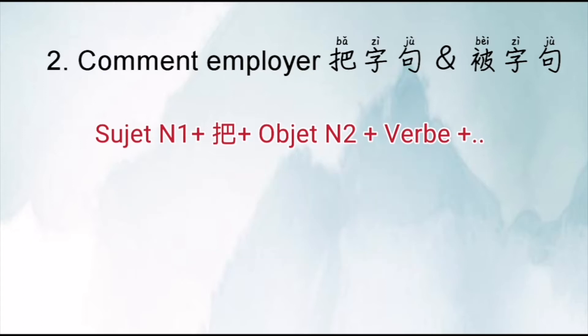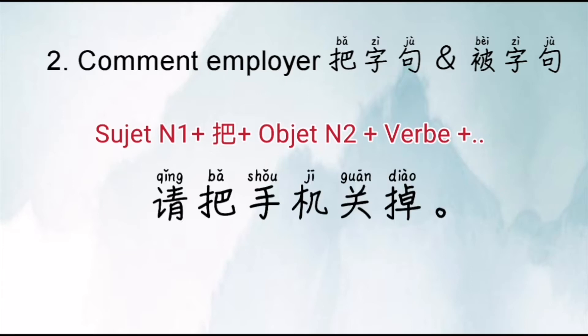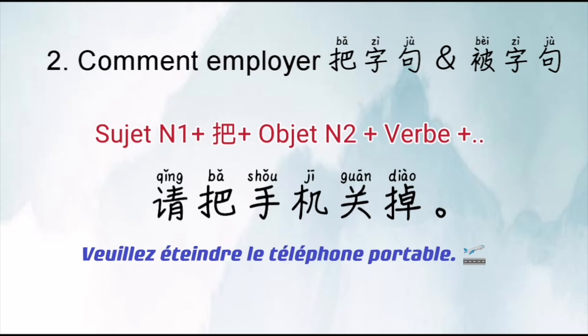Quatrième exemple, c'est une phrase impérative avec BA. L'exemple : QING BA SHOU JI GUAN DIAO. C'est une phrase que vous pouvez souvent entendre dans l'avion. QING, c'est « veuillez », un mot de politesse. SHOU JI, c'est téléphone portable. GUAN DIAO, c'est éteindre. Donc ça veut dire : veuillez éteindre le téléphone portable. C'est une phrase impérative en employant BA.